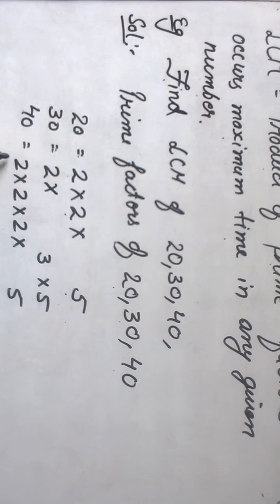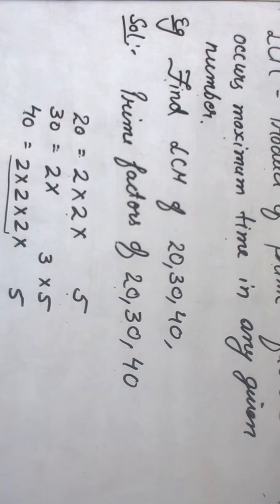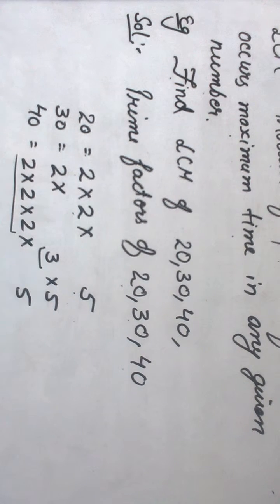Here we can see that 2 occurs maximum 3 times. 3 occurs for 1 time and 5 occurs for 1 time.